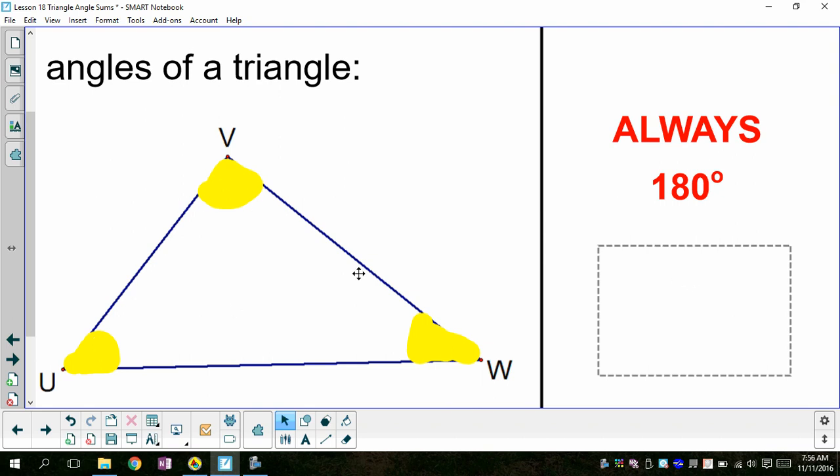So angle U, angle V, and angle W are always going to add up to 180 because this is a triangle.